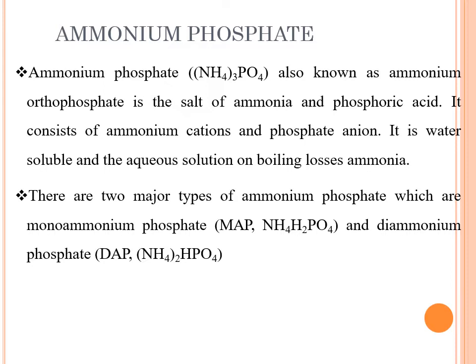Coming to ammonium phosphate, we will see about its formula, composition, and types. The ammonium phosphate formula is (NH4)3PO4, also known as ammonium orthophosphate, and is the salt of ammonia and phosphoric acid. It consists of an ammonium cation and phosphate anion. It is water soluble, and its aqueous solution loses ammonia on boiling. There are two types: monoammonium phosphate with formula NH4·H2PO4, and diammonium phosphate with formula (NH4)2HPO4.